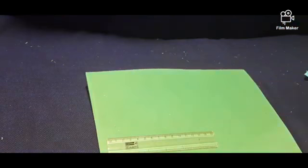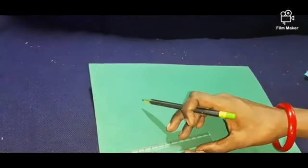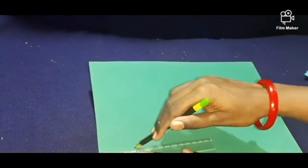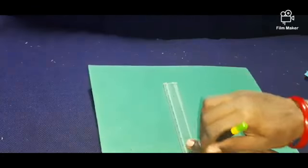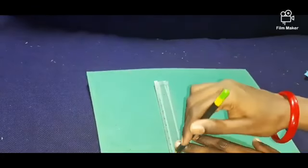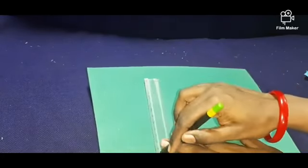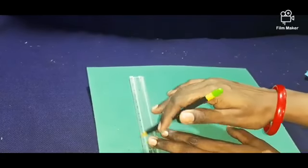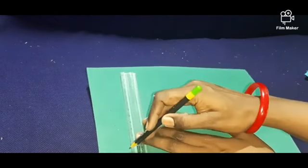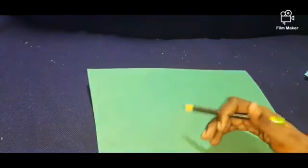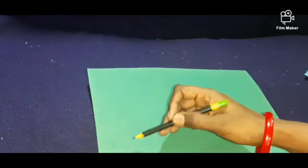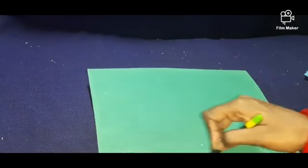You can take the back side. Take the pencil and draw this line, center line. Like this you can draw the lines first. After drawing the lines now, you can draw this slanting line.